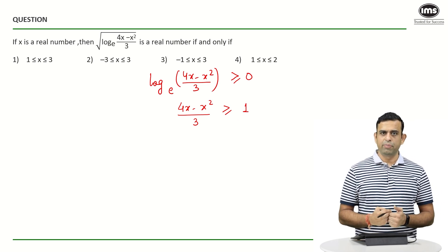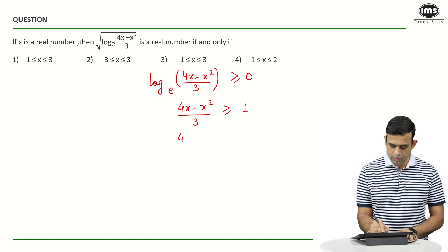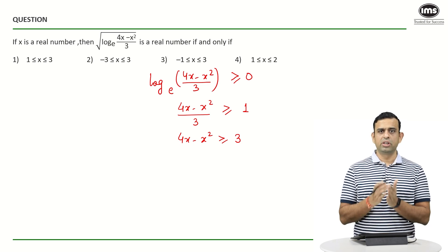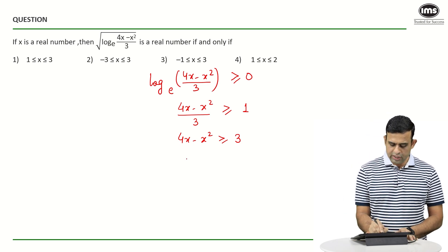If I now cross multiply by 3, I will get 4x - x² ≥ 3. Let's now take every term on the right-hand side.